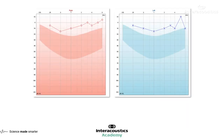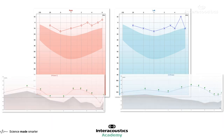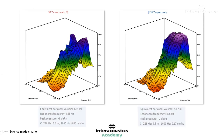Audiometry revealed a very normal audiogram in both ears and DP-OAEs were essentially normal on both sides. So at that point there was nothing to be concerned about, and wideband tympanometry was then performed.